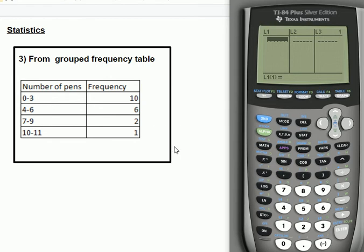So we're going to put the midpoints of this column in as our x values: 1.5, midpoint of 4 and 6 is 5, midpoint of 7 and 9 is 8, and the midpoint of 10 and 11 is 10.5. Remember, if you're ever not sure about a midpoint, add them up and divide by 2.